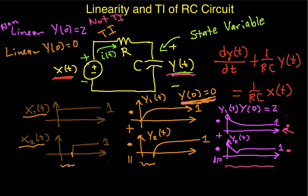So, in this case, we can see that in order for the circuit to be linear, the initial value for the state variable, which is the capacitor voltage, has to be zero.